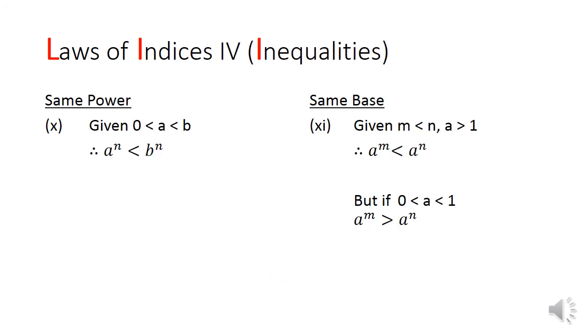Laws 10 and 11 deal with inequalities involving indices. Law 10 states that if a is less than b, and if I raise both sides to the nth power, a to the power of n will still be less than b to the power of n. In law 11, if m is less than n for a base greater than 1, a to the power of m is smaller than a to the power of n. However, if the base lies between 0 and 1, a to the power of m is greater than a to the power of n.